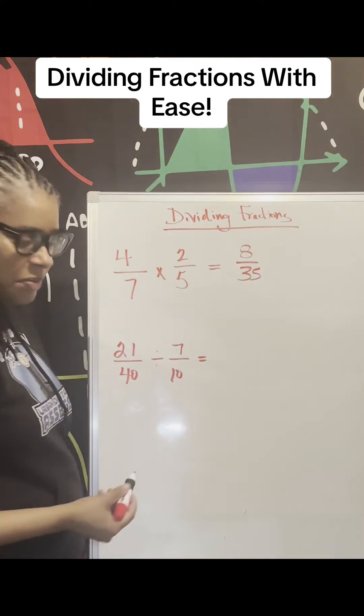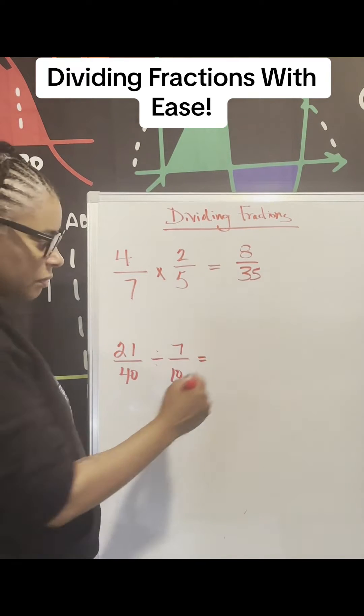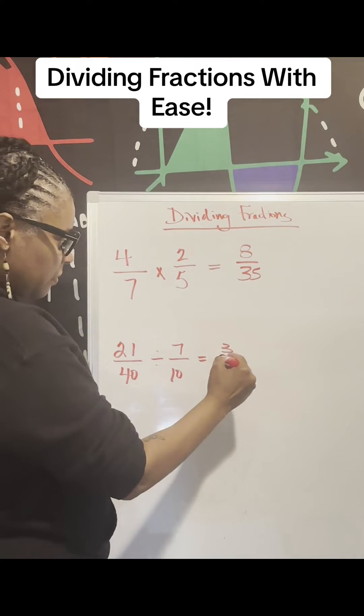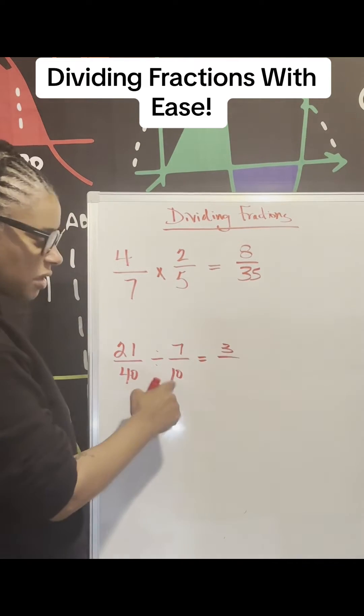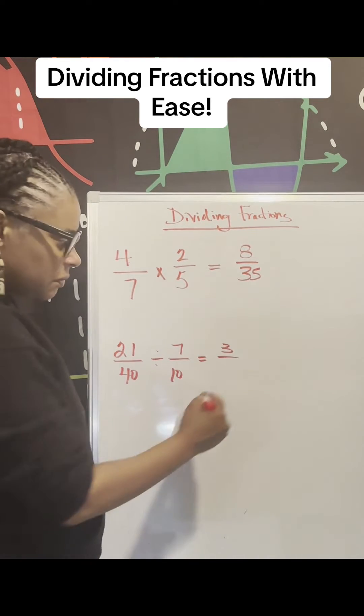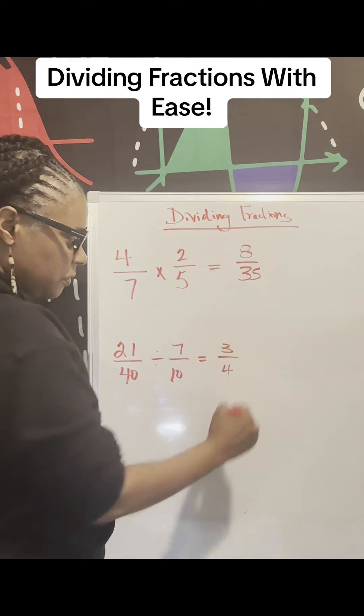We can do the same thing here. 21 divided by 7 is 3. 40 divided by 10 is 4.